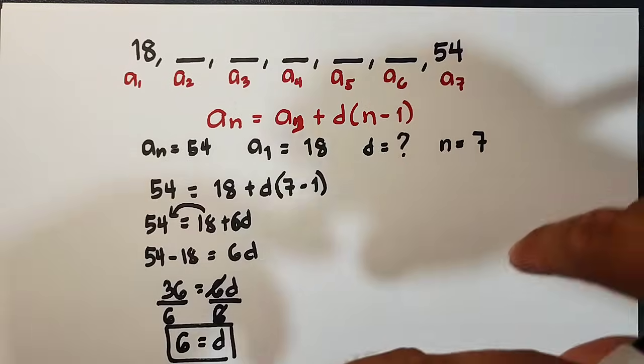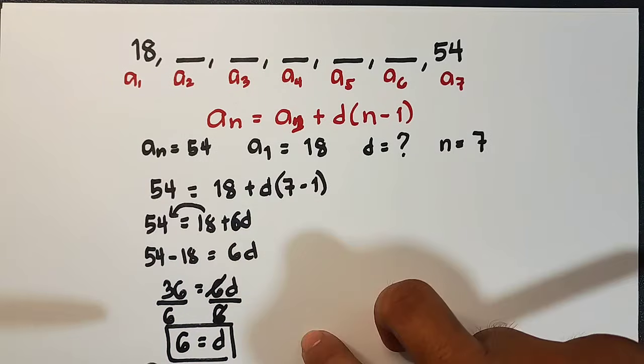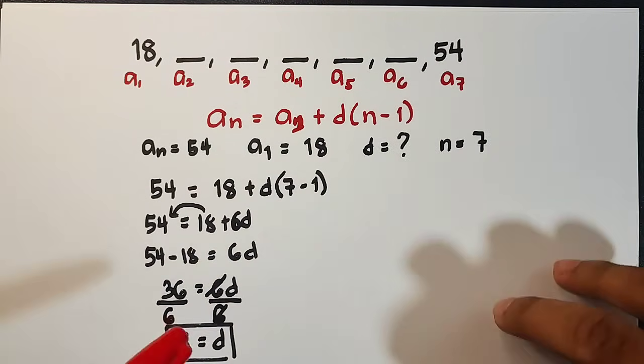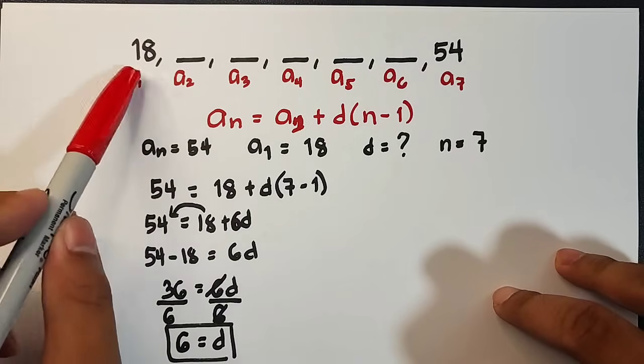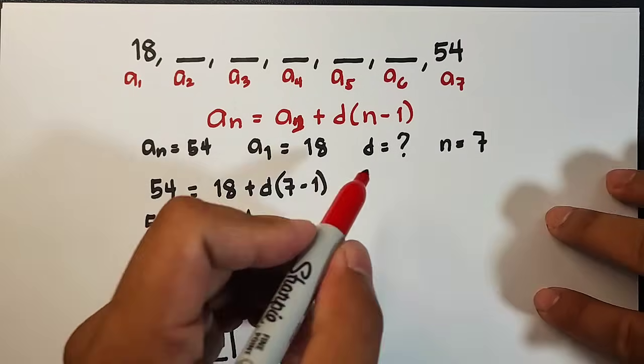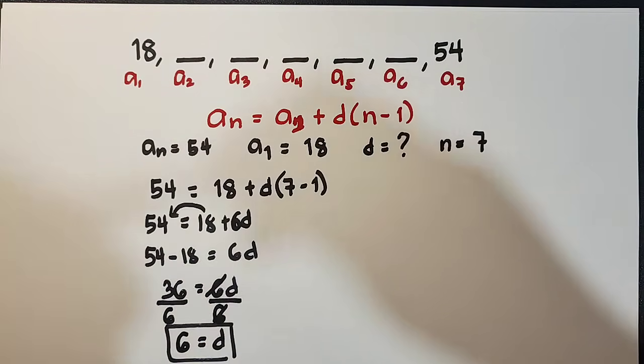Now, how are we going to find the missing terms, sir, if we have the value of d? Remember, we can find the succeeding terms or the next term if we add the common difference from the previous or the given terms. Like this example, like this one, you already have your a sub 1.